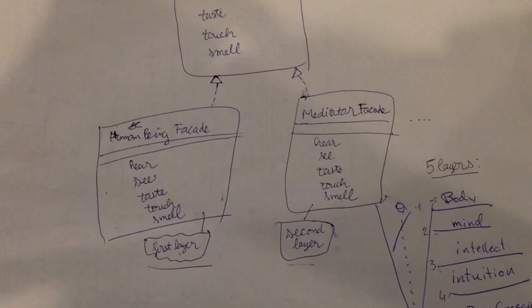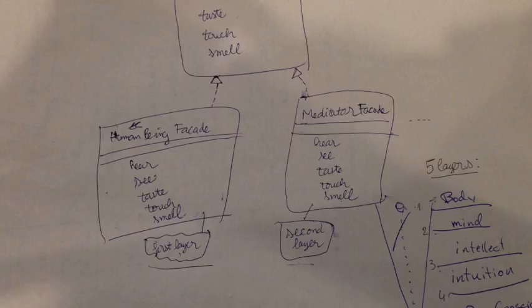A human being is pure consciousness wrapped in 5 layers known in Vedanta. The 5 layers are physical body, mind body, energy body, intuition body, and joy body.